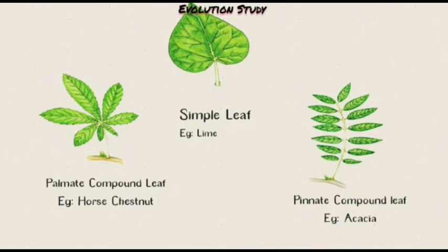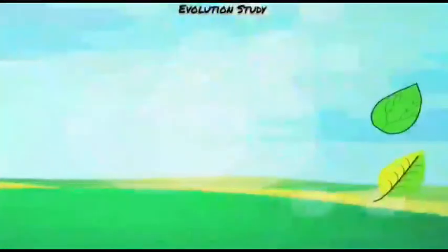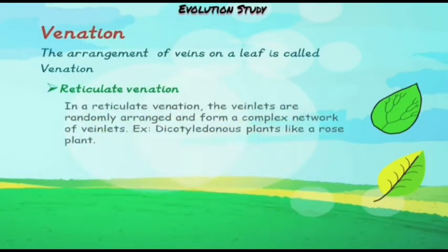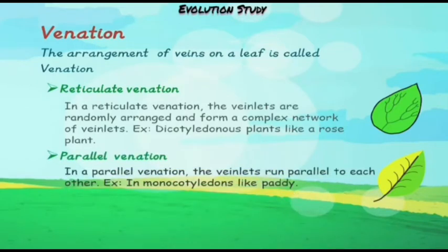Let's talk about venation. What do you mean by venation? The arrangement of the veins on a leaf is called venation. These are of two types: reticulate venation and parallel venation. Now let me make this clear — in reticulate venation, the veins are randomly arranged and form a complex network of veins.